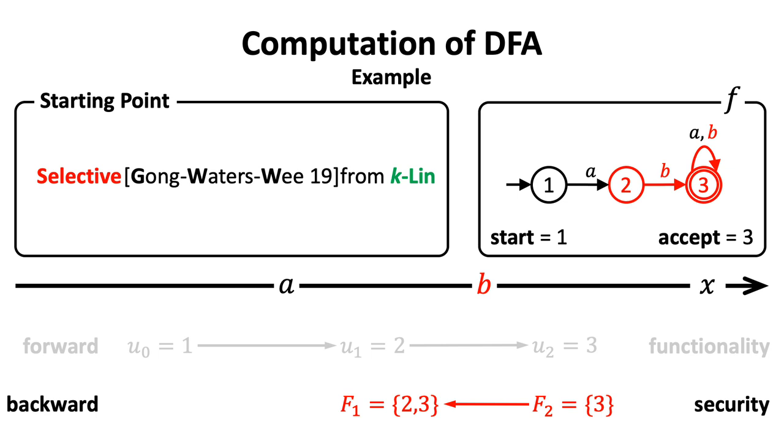Here, we are actually using the inverse of the transition function. Now, the machine is at state 2 and 3 at the same time.